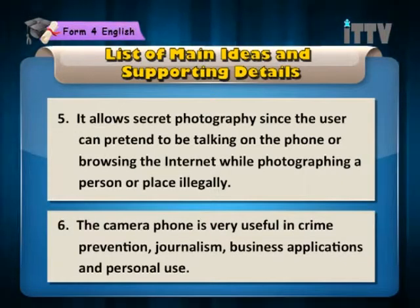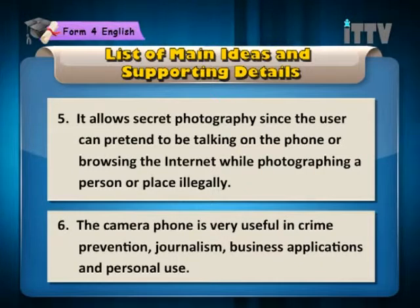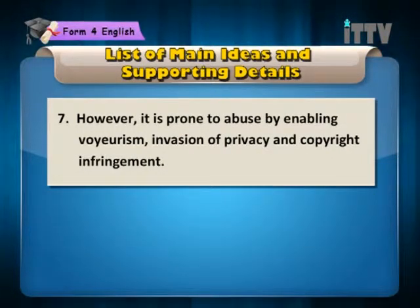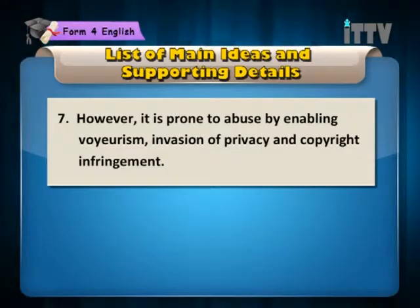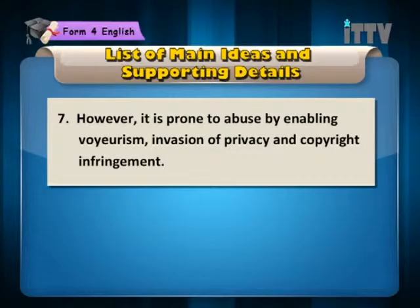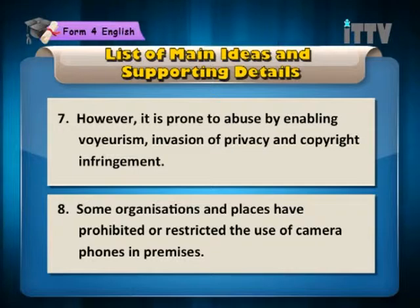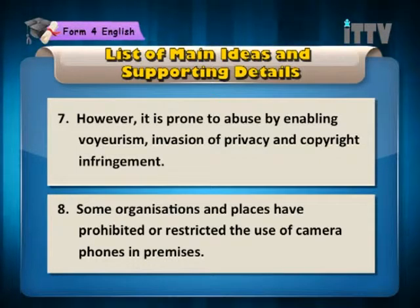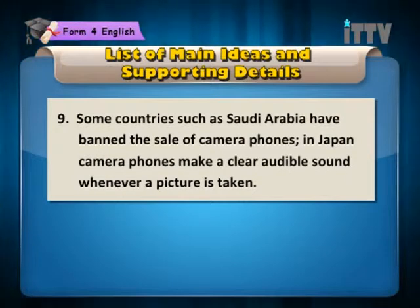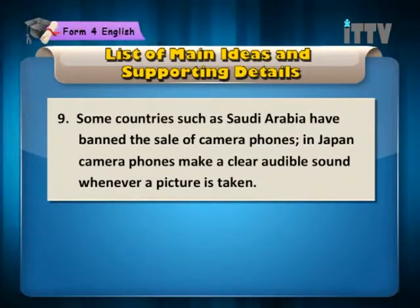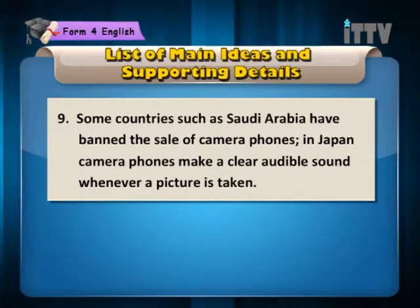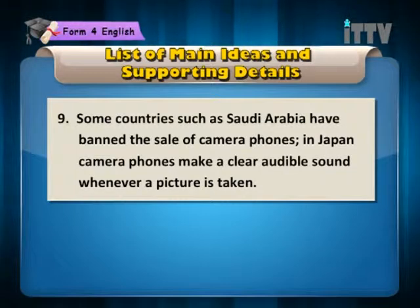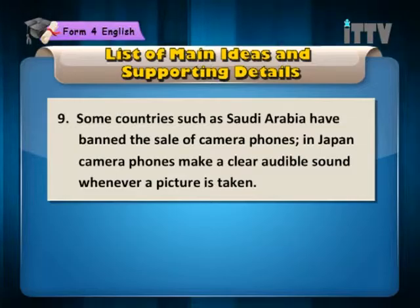Sentence 6: The camera phone is very useful in crime prevention, journalism, business applications and personal use. Seventh sentence: However, it is prone to abuse by enabling voyeurism, invasion of privacy and copyright infringement. Sentence 8: Some organisations and places have prohibited or restricted the use of camera phones in premises. Ninth sentence: Some countries such as Saudi Arabia have banned the sale of camera phones. In Japan, camera phones make a clear, audible sound whenever a picture is taken.